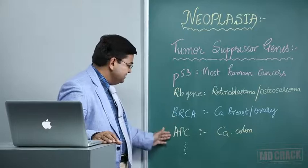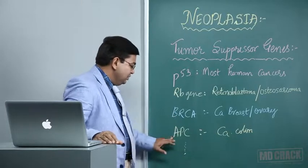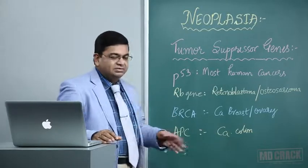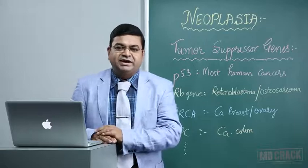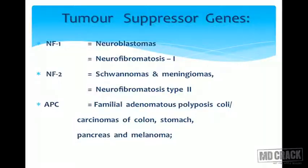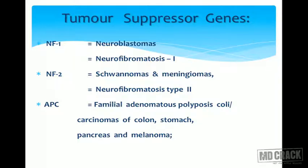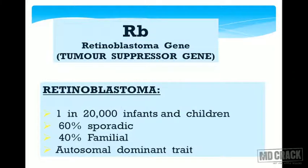The APC gene is very well described and extensively studied in colorectal malignancies. The NF1 gene is associated with neuroblastomas and neurofibromatosis type 1, and NF2 is linked to schwannomas and meningiomas. The APC gene is implicated not only in colorectal malignancies but also in carcinoma of the stomach, pancreas, and melanomas.